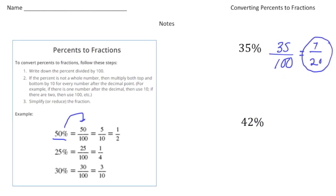Let's try this one. 42%. Well, we're going to write it as 42 over 100. And then that can reduce down to, well, they're both even, right? So I can divide it by two. So 21 over 50. And 21 fiftieths is reduced.